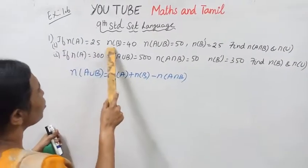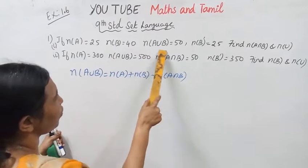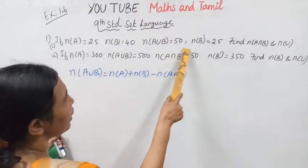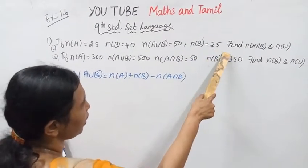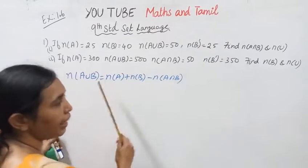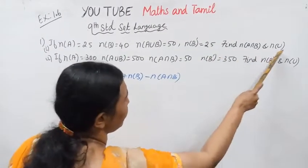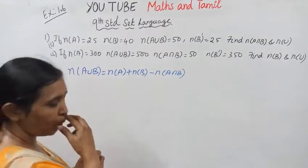N of A equal to 25, N of B equal to 40, N of A union B equal to 50. What is N of A intersection B and N of U?